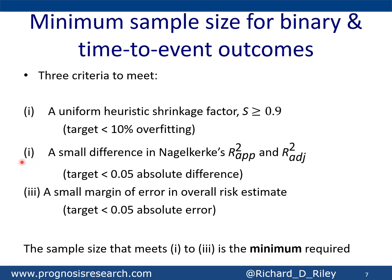Another way of measuring overfitting is to look at the difference between the overall model fit observed and the optimism-adjusted overall model fit, as defined by R-squared or Nagelkerke's R-squared, which goes from 0 to 100%. So we might target a small difference on this scale — say less than 5%, or an absolute difference in R-squared of 0.05.